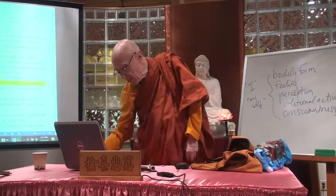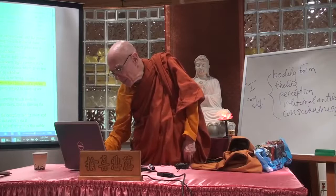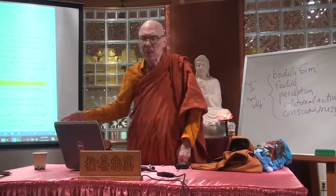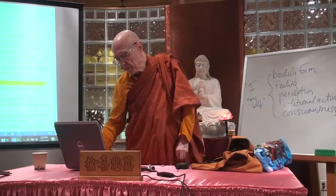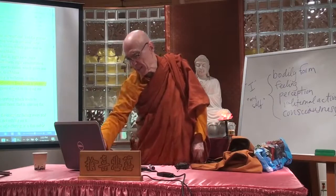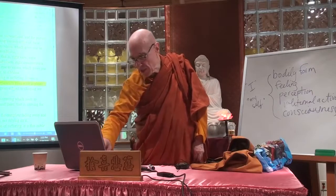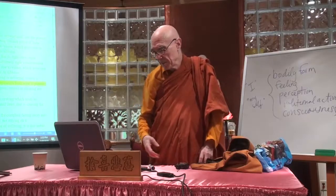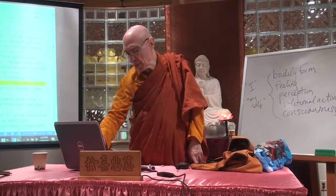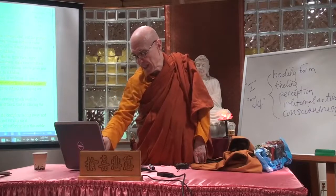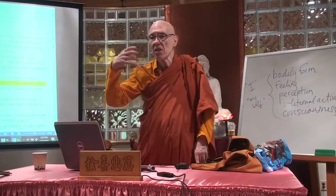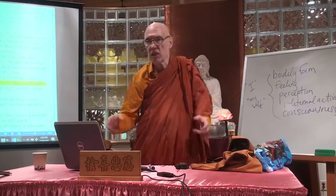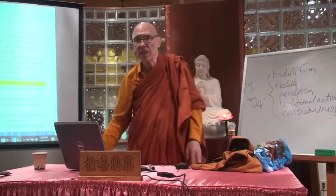Because they're constantly undergoing change, never standing still for a moment, all dependent on conditions, they're not a basis for true security or true lasting happiness — even though we cling to them in the hope that they will give us real happiness. That is why the Buddha says that these five aggregates are dukkha. I call this the aspect of existential dukkha — an aspect of dukkha that spreads to all of our experience.